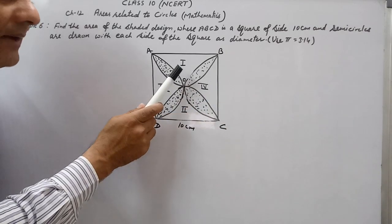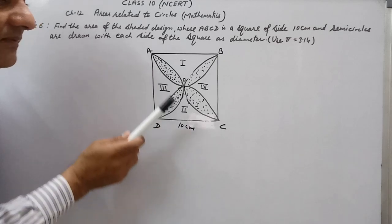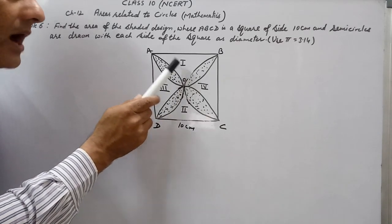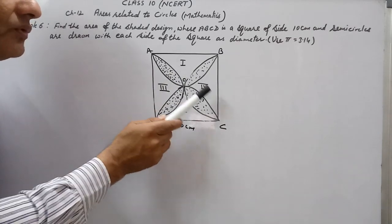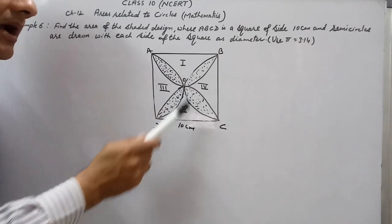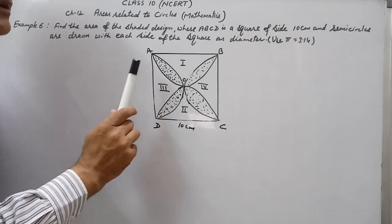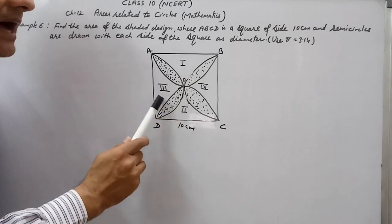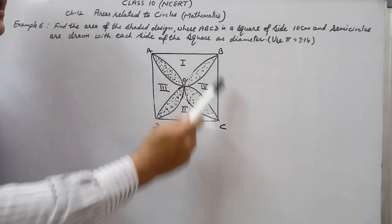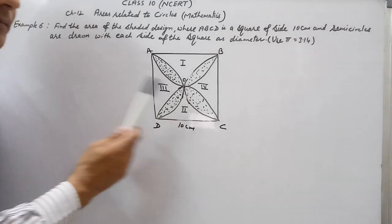To find the shaded area, we first find the area of unshaded parts 1, 2, 3, and 4. Then we subtract the total unshaded area from the area of the square to get the area of the shaded part.